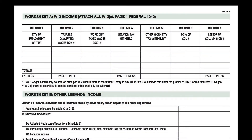Starting with the first W-2 and column one on Worksheet A, please enter your City of Employment. If you paid local taxes where you work, please use the city name or names that show up in box 20 of your W-2. If you did not work in a taxing municipality, enter non-taxing as the City of Employment.